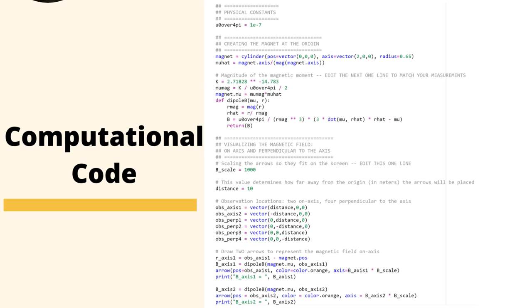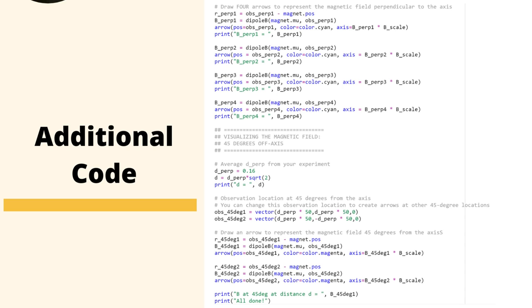A lot of the rest of this code is basically creating vectors and arrows and the size of them in order to show the computational model. This is just the same thing—computational model showing the arrows throughout the entire experiment that we've been collecting data for.